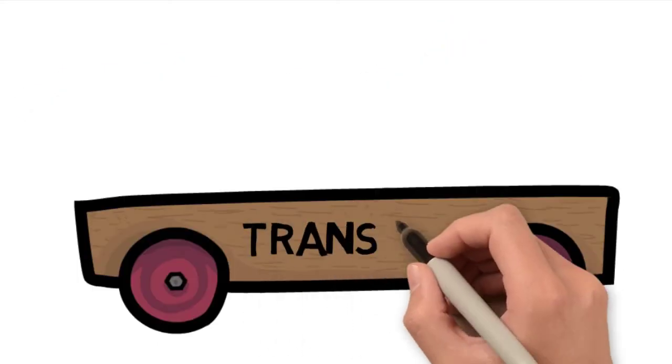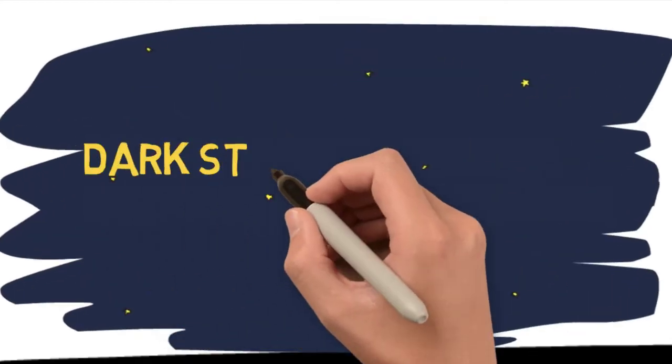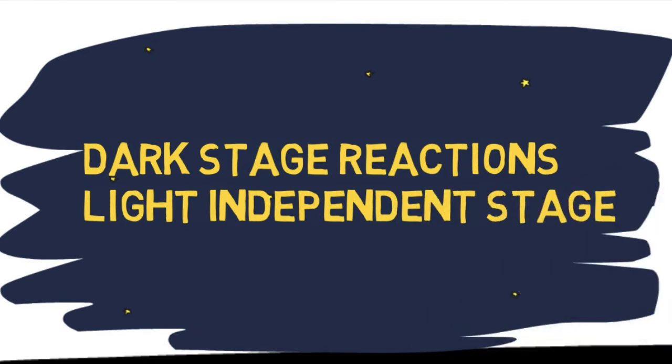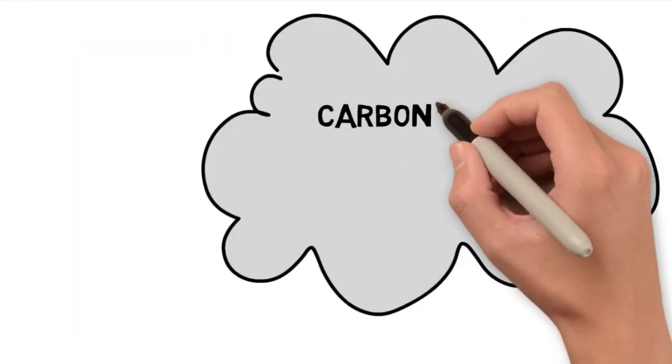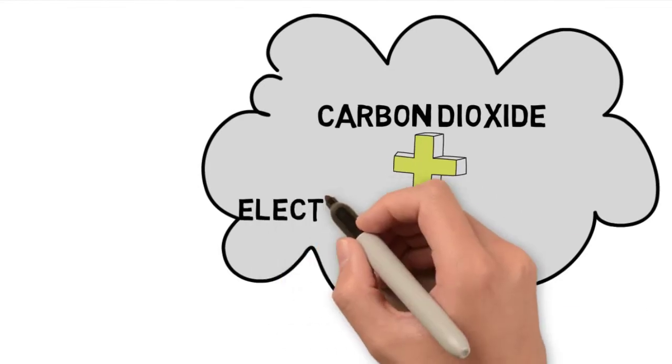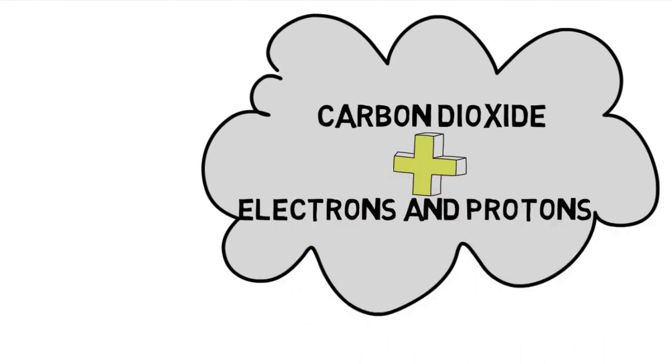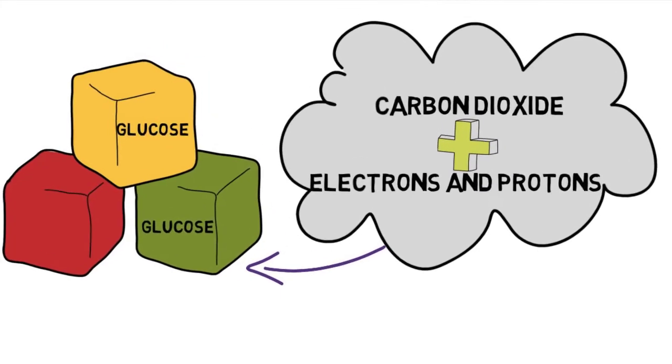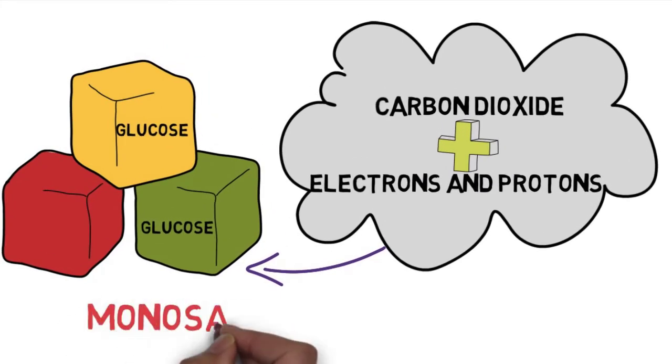Then is the transferring stage where the electrons and protons are transferred to the dark stage reactions or the light independent stage. So you can see it's really important that all of this trapping and transferring takes place because carbon dioxide is going to combine with those electrons and protons that were trapped and transferred to form glucose, that really important monosaccharide.